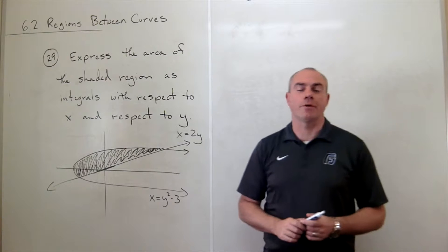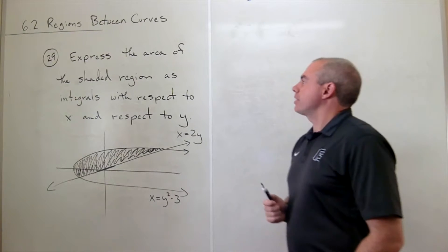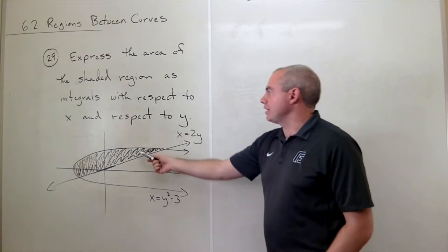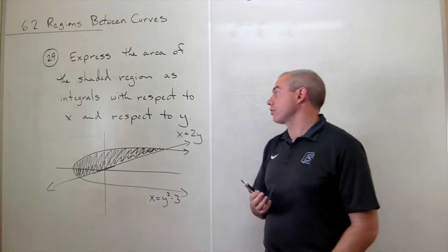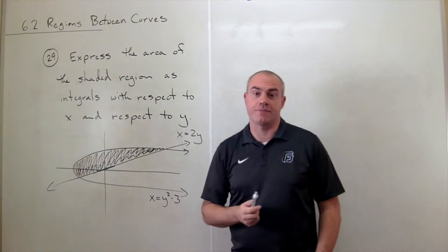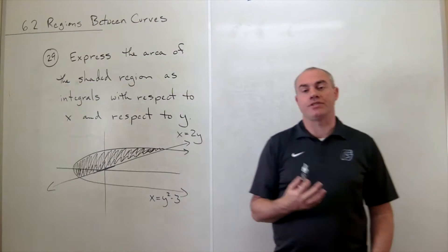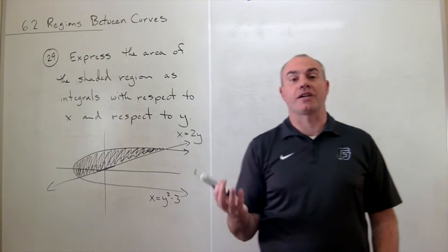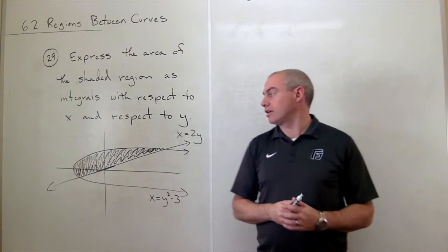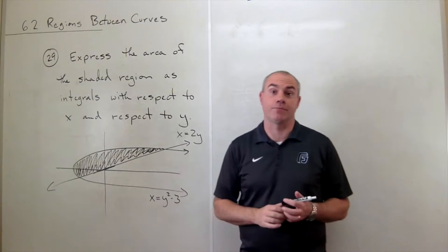Hi, I'm the calculus professor, and today we'll be talking about areas between curves. In problem number 29, we'd like to express the area of this shaded region as integrals — or possibly just one integral — with respect to x and with respect to y. I don't want to actually integrate these; I just want to set up integrals that would give me the area of this region.